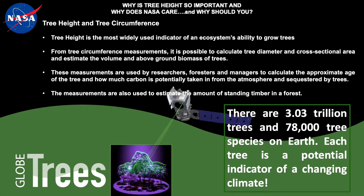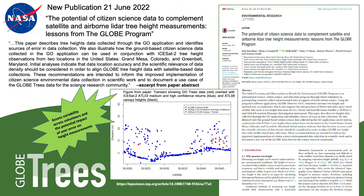One of our major goals with the tree height observations is to combine the NASA Globe Observer Trees tool data with the space-based data from NASA. We decided to publish a paper looking at Globe Observer data from two specific locations where we saw a lot of data coming in: Grand Mesa, Colorado and Greenbelt, Maryland. We also used data from students in New York to assess the variability across volunteers and the potential impact of user error on height measurements.